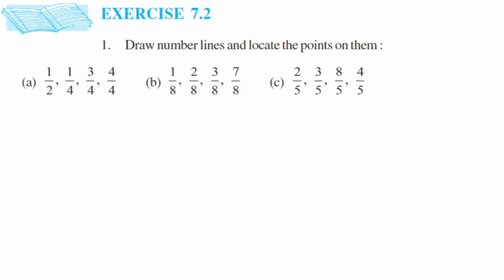Starting with the first question, the denominator is 4 and all the fractions given are proper fractions. Proper fraction means the numerator will be less than the denominator, and they always lie between 0 and 1. This is the one thing you should remember: proper fractions always lie between 0 and 1.